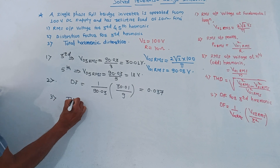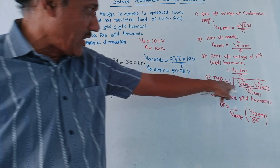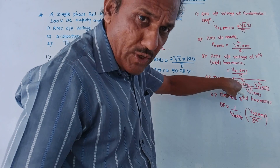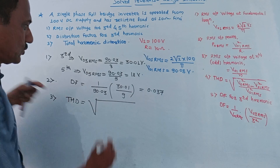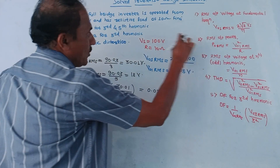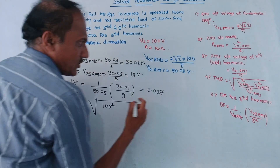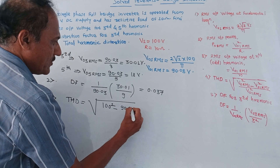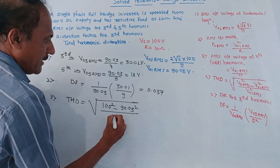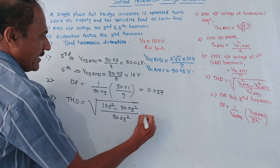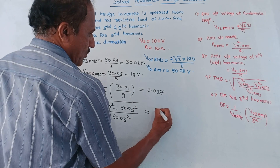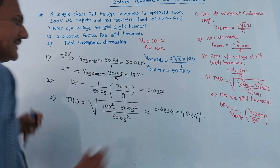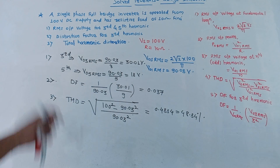Third part: total harmonic distortion, that is THD. The formula is THD = √(V0RMS² − V01RMS²) upon V01RMS. V0RMS equals Vs = 100, so it becomes √(100² − 90.03²) upon 90.03. Solving this, the answer is 0.4834, which in terms of percentage is 48.34%. These are the calculations related to the given numerical.